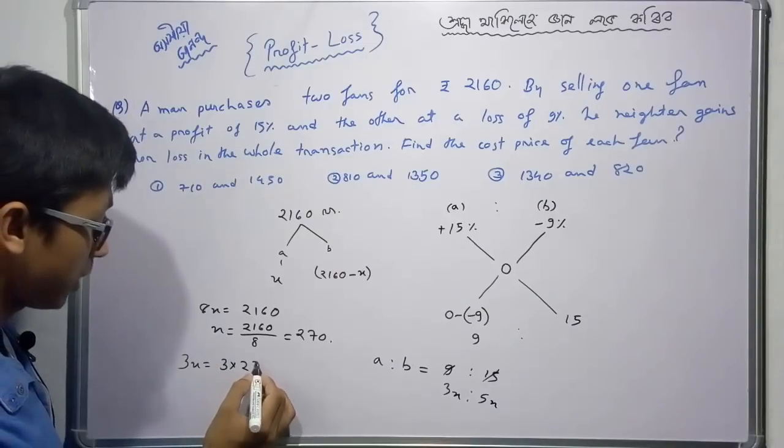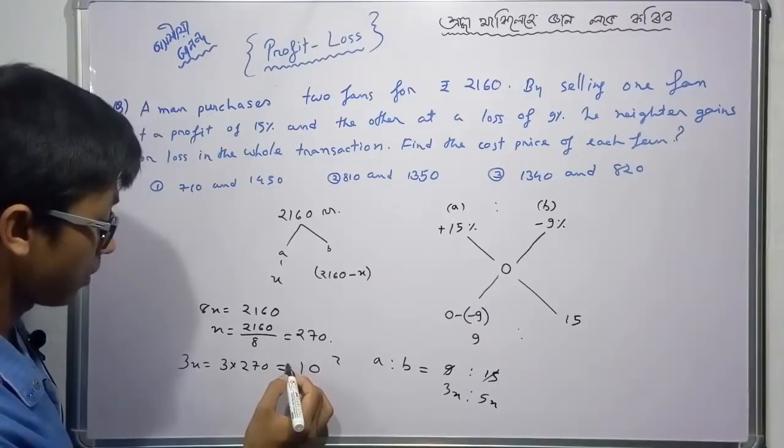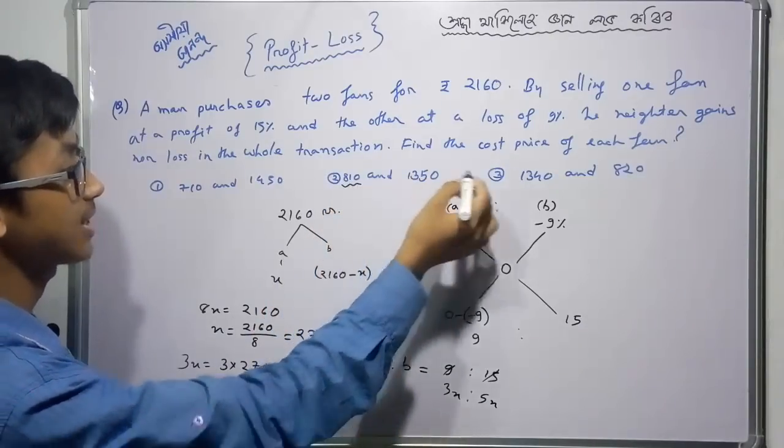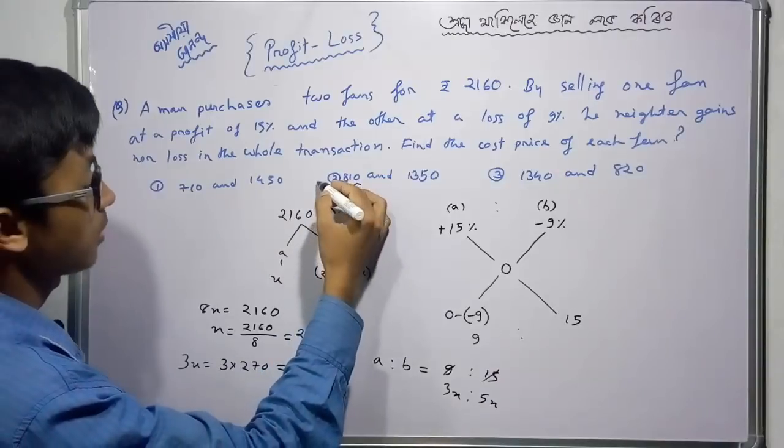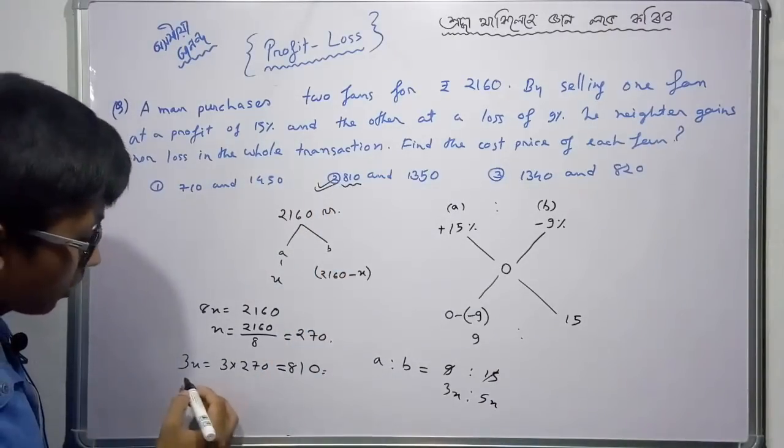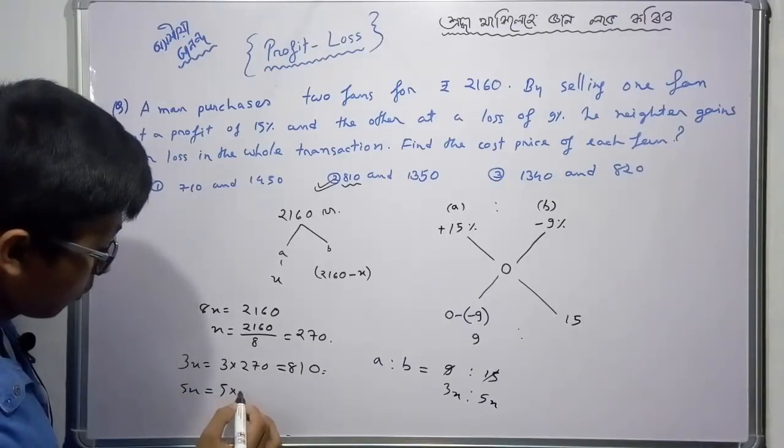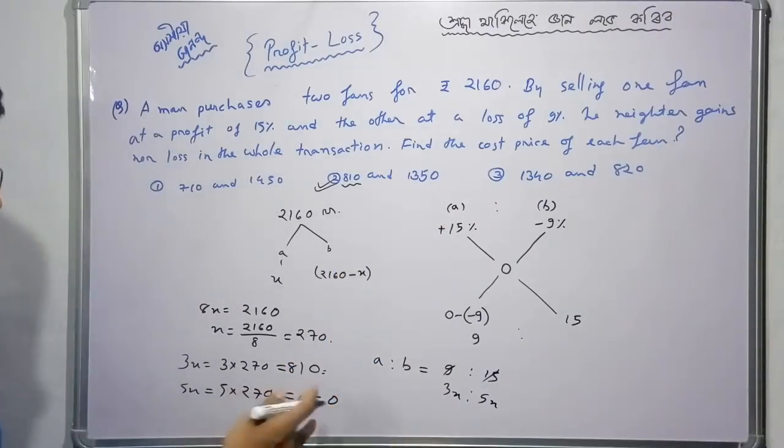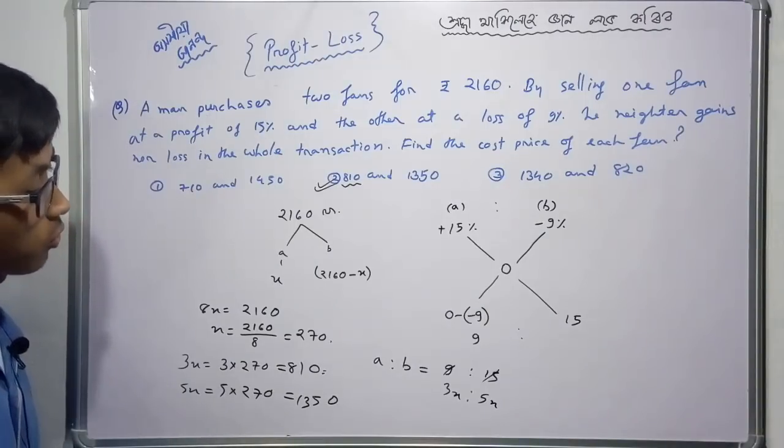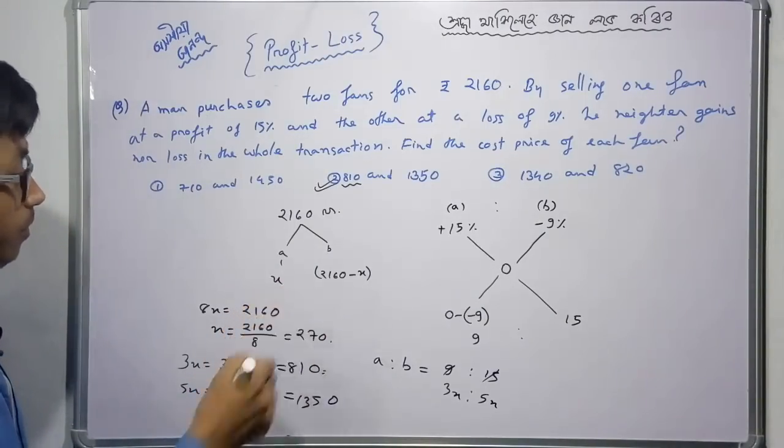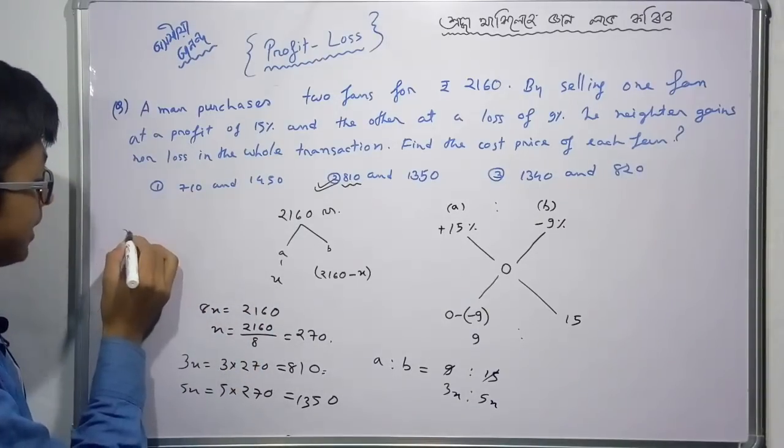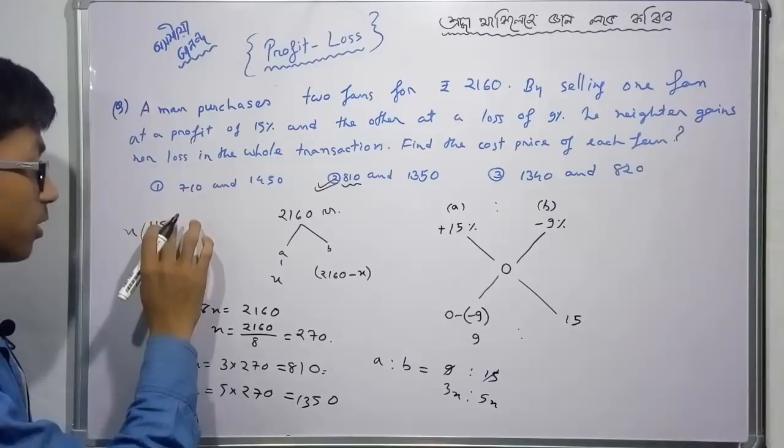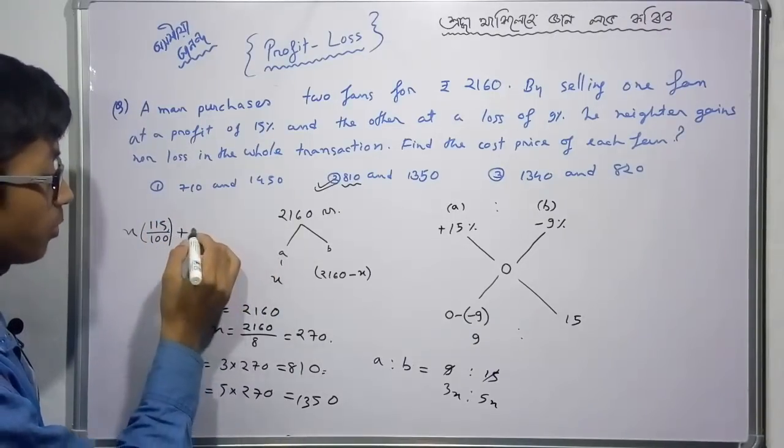Since 8X equals the total cost of 2160, we can solve for X. 3X equals 810, so one fan costs Rs. 810. For the other fan, 5X gives us the second cost price. Looking at the options, we can verify which answer matches our calculation.